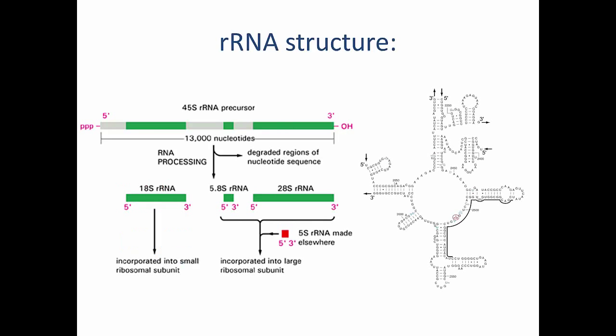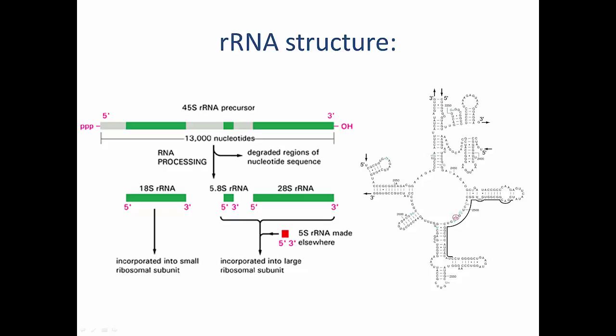Moving on from mRNA to the structure and function of rRNA and the ribosome: ribosomal RNA, or rRNA, is the RNA component of the ribosome. It is a non-coding structural RNA essential for protein synthesis. rRNA constitutes approximately 60% of the mass of the ribosome, with the other 40% being protein. Ribosomes contain two major RNAs and one or two minor RNAs, arranged into a large subunit and a small subunit.